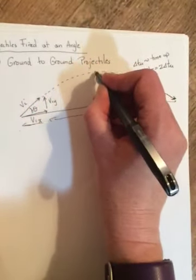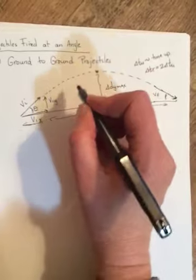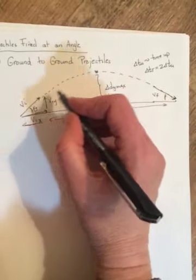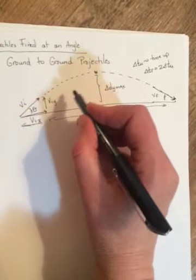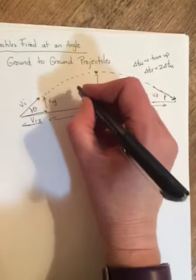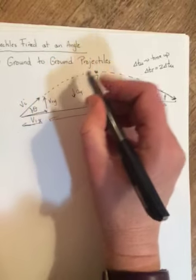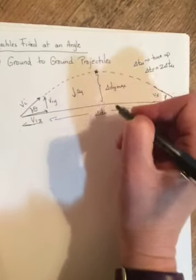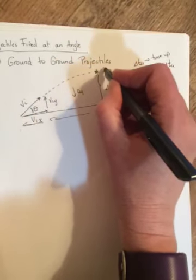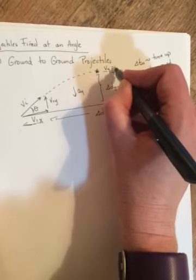That becomes important because at this spot right here, as it goes up, the VIX doesn't change, but the VY gets smaller and smaller and smaller because, remember, AY is acting down. And so at this point, when it's at its highest height, the VY is zero.